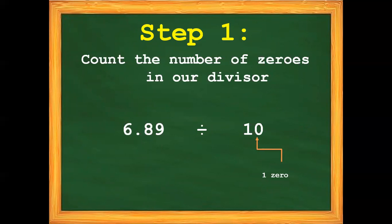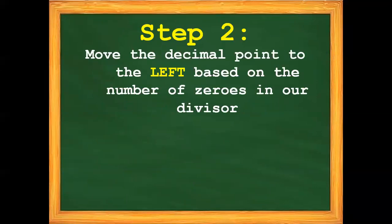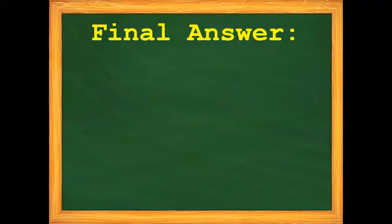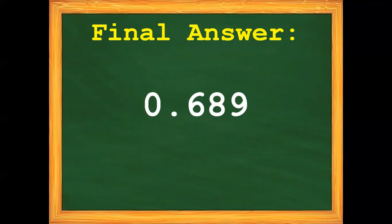Now for step number 2: move the decimal point to the left based on the number of zeros in our divisor. Since we have 1 zero in 10, our dividend — 6 and 89 hundredths — moves the decimal point to the left once. So the final answer is 0 and 689 thousandths.